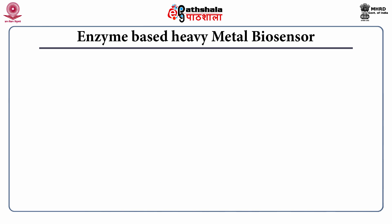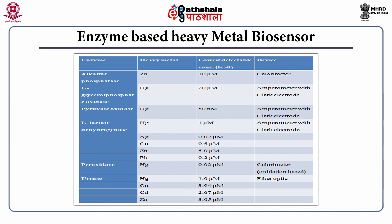Here are examples of enzyme based biosensors. As you can see, enzymes can respond to a number of heavy metals, so there is a limitation that they cannot be used for development of specific heavy metal biosensors. But if we want to develop biosensors for toxicity analysis, various kinds of enzymes can be used. These include alkaline phosphatase, pyruvate oxidase, lactate dehydrogenase, peroxidase, urease, etc.